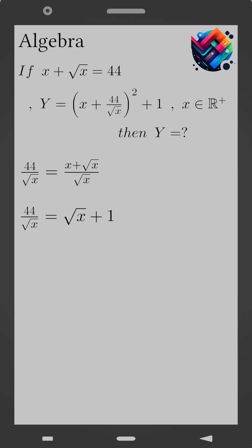Now substitute this into the expression for Y. We have Y equals (x plus 44 over the square root of x) all squared plus 1.